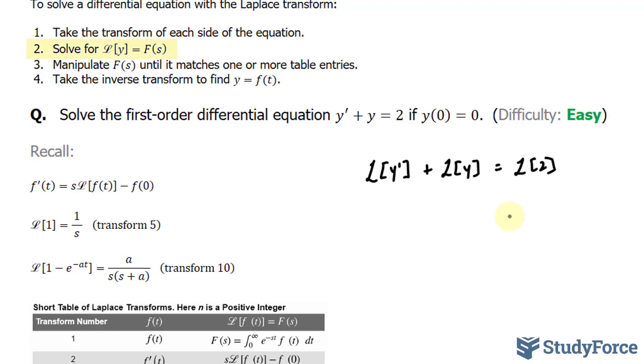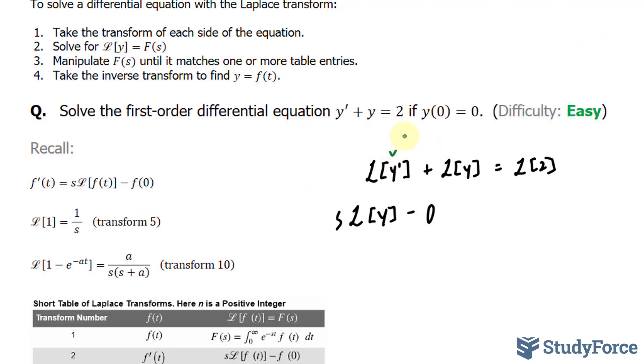In step number two, we're expected to solve for the Laplace transform of y, which gives us our frequency function f of s. I'm going to start by finding out what this is equal to. According to this, the Laplace transform of f prime, which in our case is y prime, is equal to s times the transform of f of t minus f at 0. So, I'll replace this with s times the Laplace transform of y minus y at 0, which in our case is equal to 0. That takes care of this.